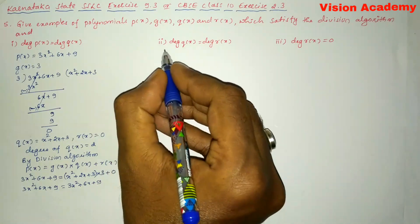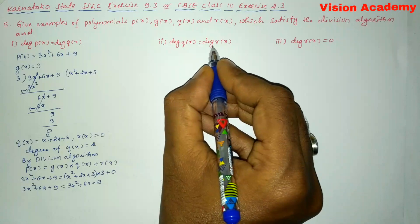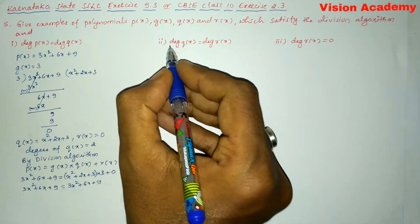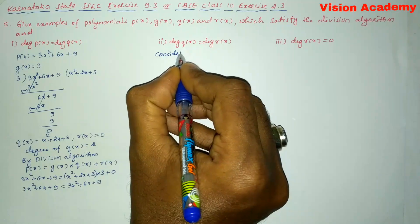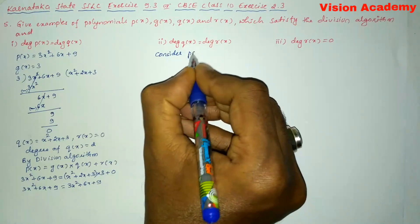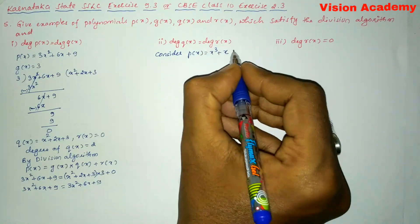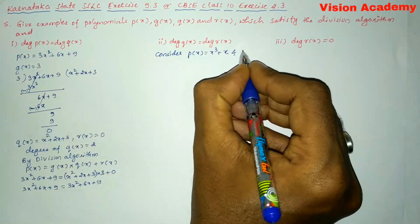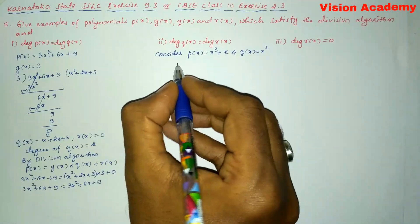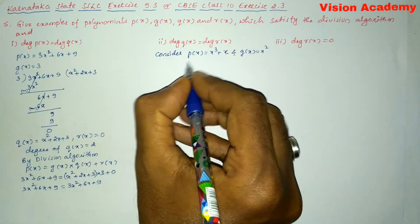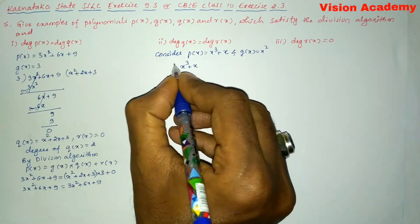Now let us move on to Roman number 2: degree of q(x) is equal to degree of r(x). Let us consider p(x) = x³ + x and g(x) = x². Let us divide the polynomial x³ + x by x².